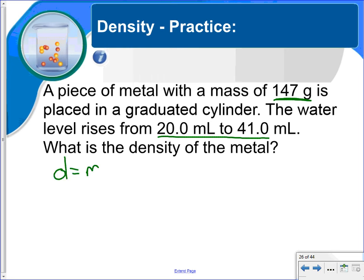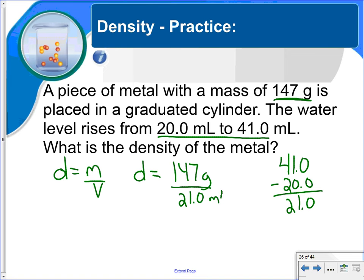So density is equal to mass divided by volume. You're looking for density. The mass is 147 grams. Now the volume is going to be the final volume minus that initial volume. And when you do that, you get 21.0, 21.0 milliliters.